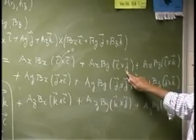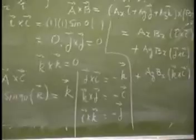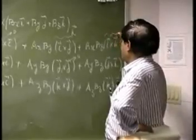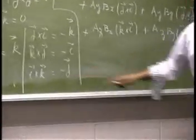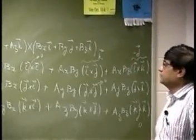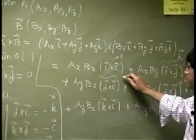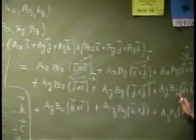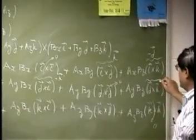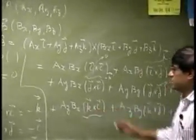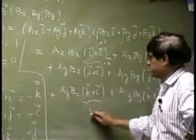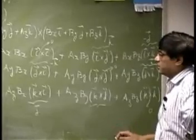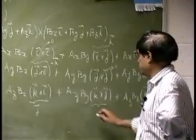i cross j, from this equation that gives you k. Then you have i cross k, that will be negative j. Then you have j cross i, this negative k. Then you have j cross k, that is going to be i. Then we have k cross i, that is going to be j. And then you have k cross j, and that should be negative i. So those are the final products of that equation.